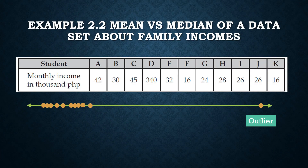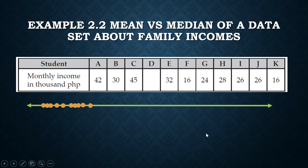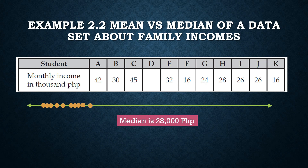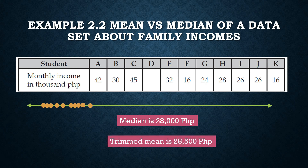But there is something else you can do without using the median — we can still use the mean. What do you do? We remove the outlier from our dataset and apply the mean to the data that is left. This is called a trimmed mean. When we removed the outlier and computed the mean, the trimmed mean came out to 28,500 pesos — very close to our median of 28,000.